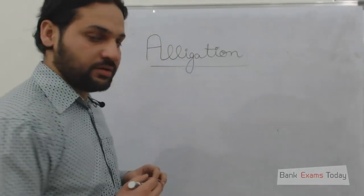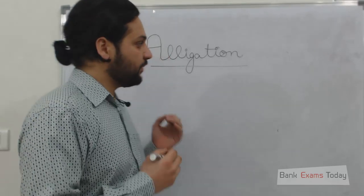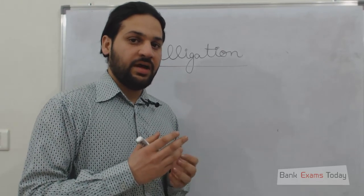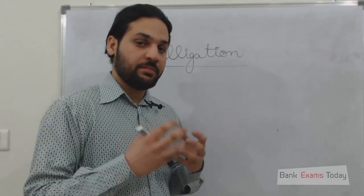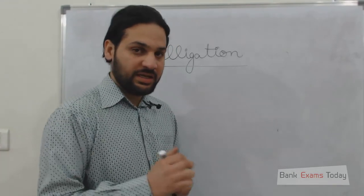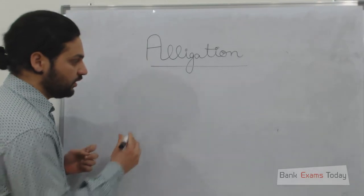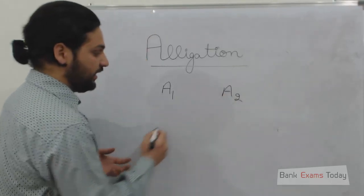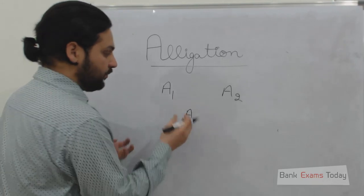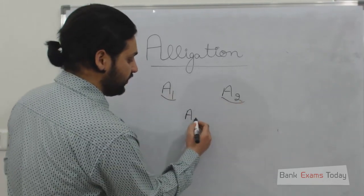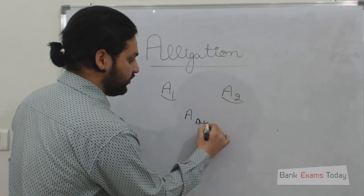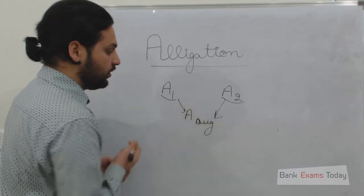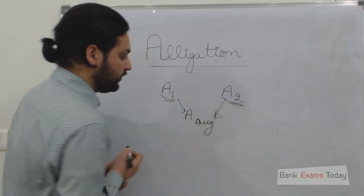Hello friends, today we will do the allegation method. First of all, let me explain what the allegation method is and why we use it. Whenever we need to determine the average or weighted average of two quantities when they are mixed, we use the allegation method. For example, there is quantity element a1, the second element is a2, and their average — when both quantities are added — is the average. If we need to calculate in what ratio a1 and a2 were added, what we do is: